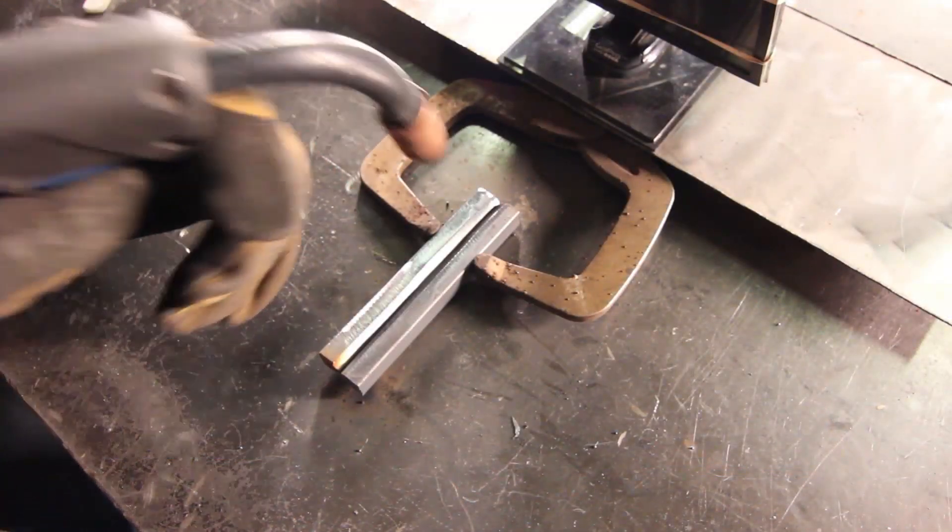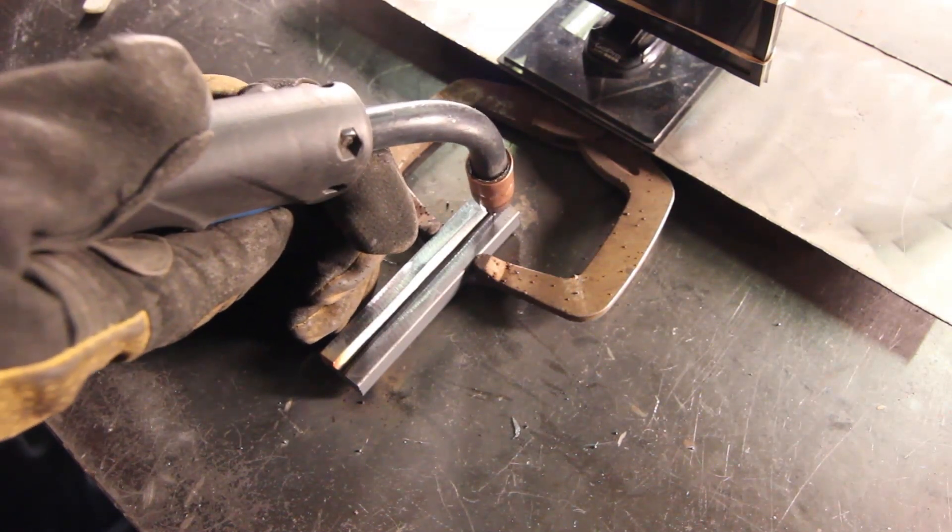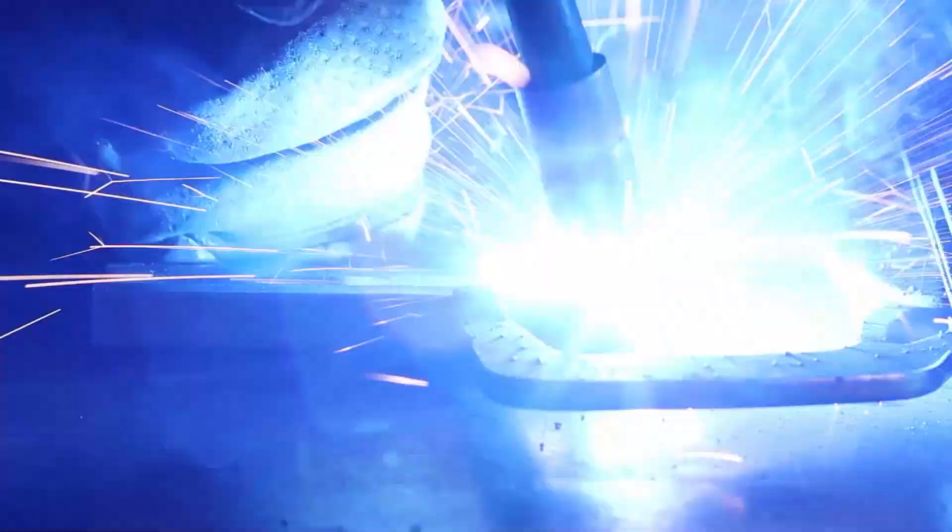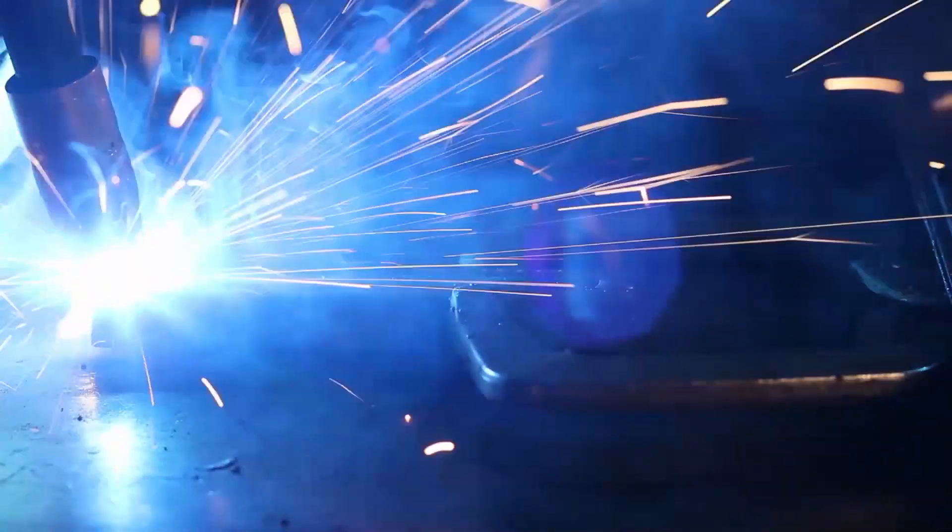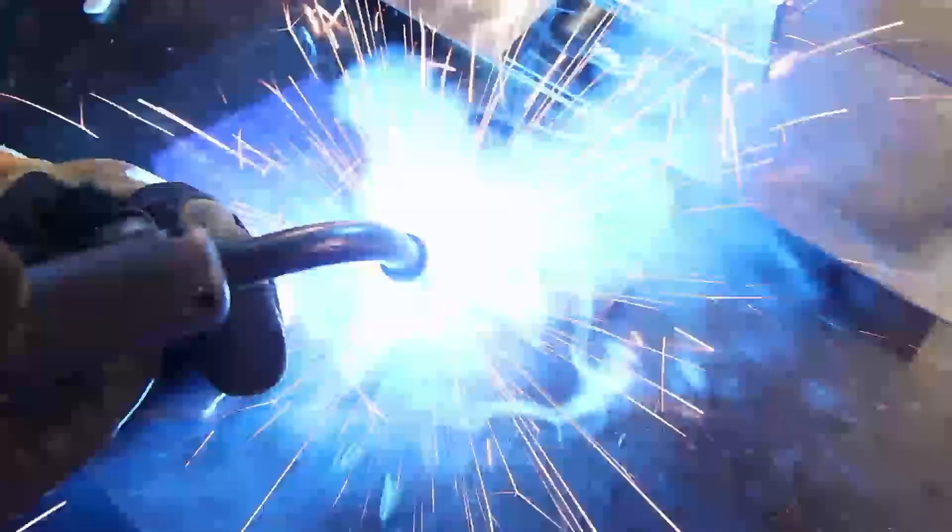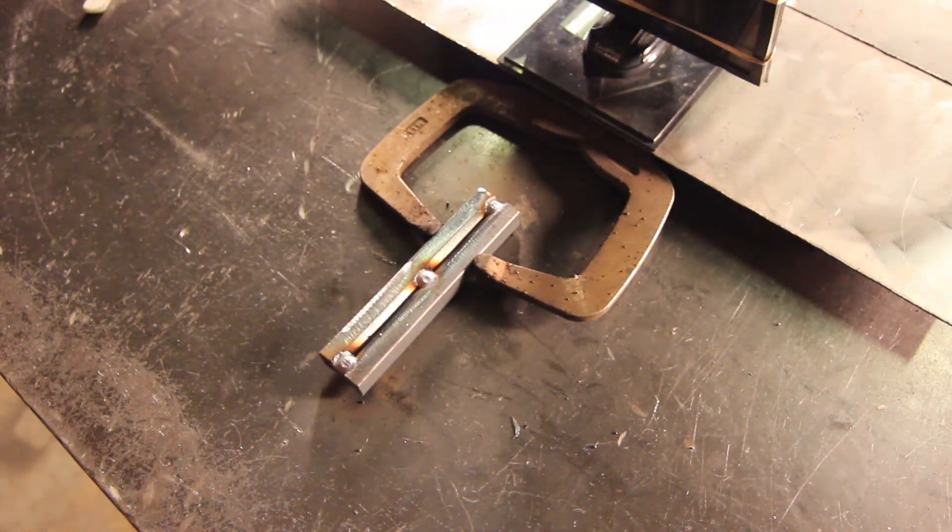We're going to start off this exercise just like the other ones, clamping our material together, tacking up to the A and C edge, cleaning and resetting our machine. The half moon technique is relatively similar